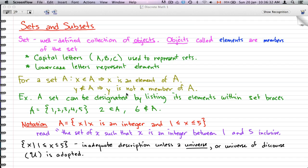Capital letters such as A, B, C or any kind of capital letter are used to represent sets. Lowercase letters are used to represent elements. For a set A, for example, X belongs to A. You can say that as X is an element of A. If Y does not belong to A, then Y is not a member of A.